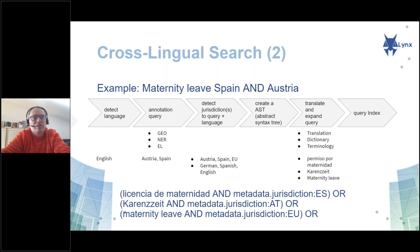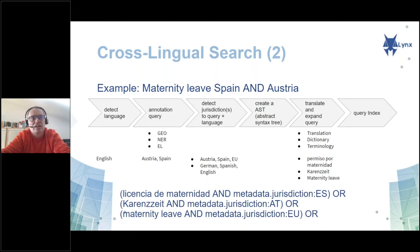Based on the languages we are detecting and the geolocations we detected, we try to get the jurisdiction you want to search for. Here in this case, the jurisdiction would be Austria and Spain, and in addition European Union, because it could also be that there is a European regulation for maternity leave on top of it.